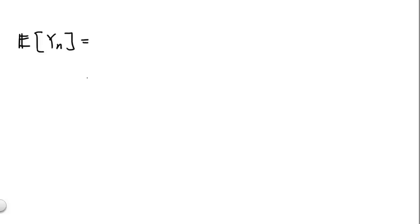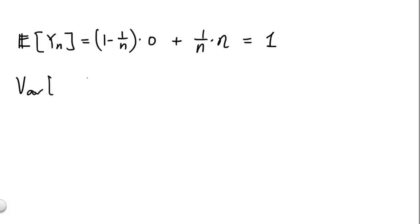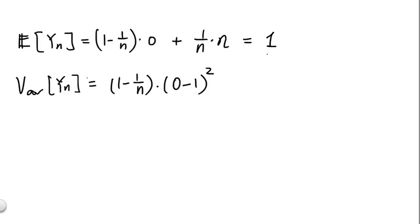Now let's turn to yn. The expected value of yn equals the probability of being at 0 times 0, plus the probability 1 over n of being at n, times value n. This gives us E[yn] = 1. For the variance of yn, we have: (1 minus 1 over n) times (0 minus 1) squared, plus (1 over n) times (n minus 1) squared. This gives us Var(yn) = n minus 1.